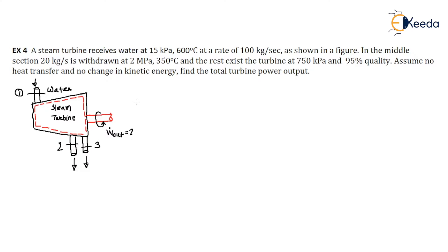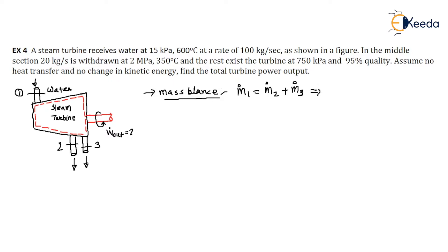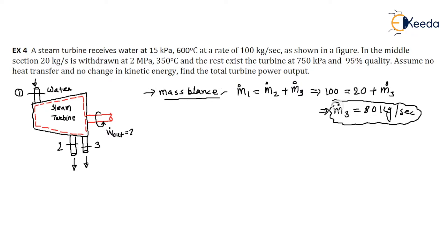In this problem there are multiple inlets and exits. The mass balance is: m1 = m2 + m3. What is the mass balance? m1 is 100 kg per second, m2 is 20 kg per second, so we can easily find m3. m3 is 80 kg per second — this is the mass flow rate at the third exit.